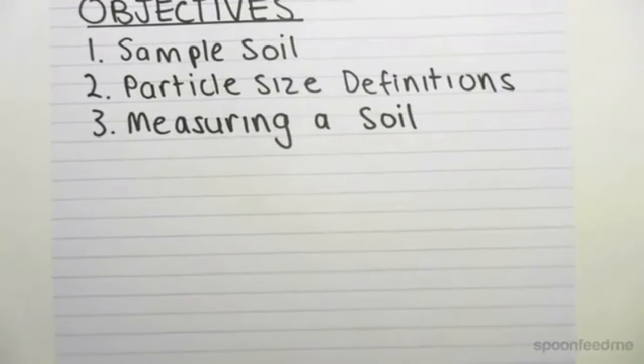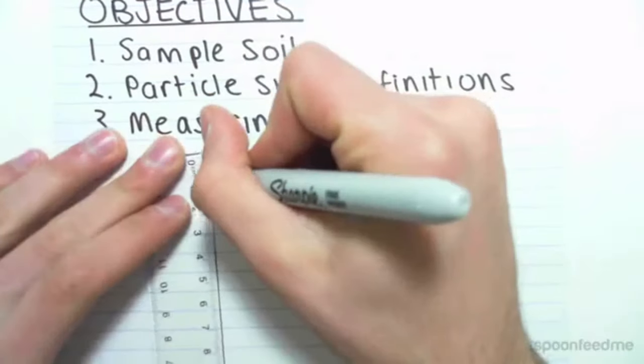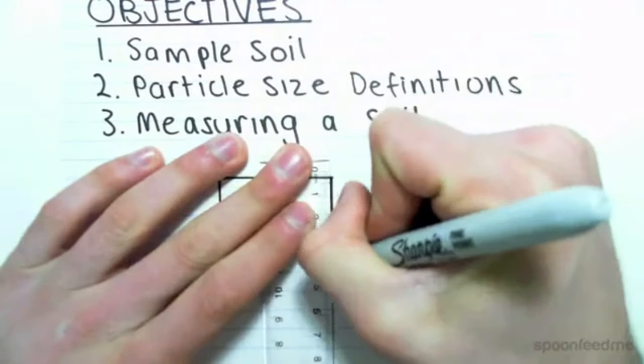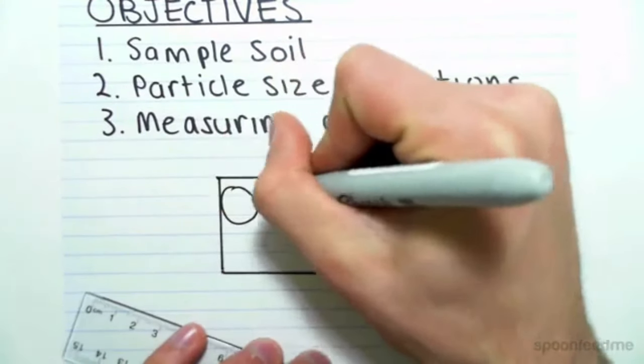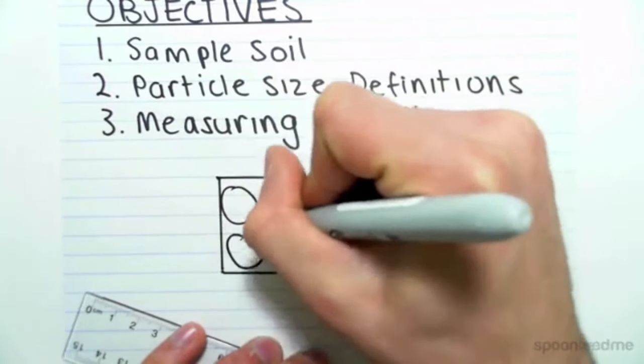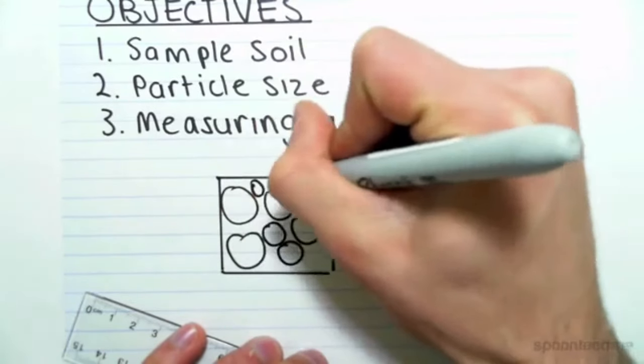First things first, what is a soil, right? A soil, if we took a sample from the ground, is going to have all different particles, all different sizes, and all probably different chemical compositions.